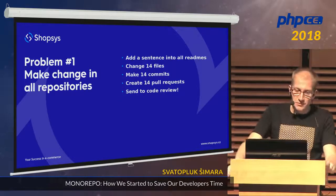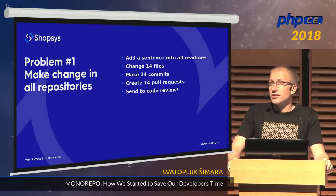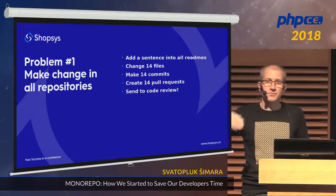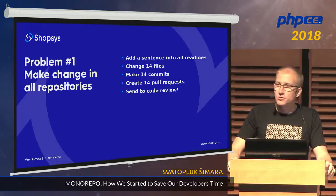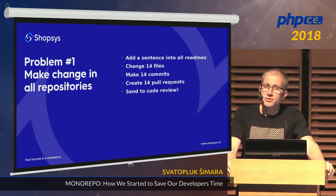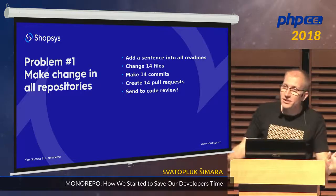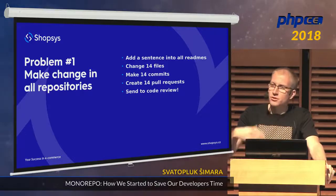The first problem: if you want to make changes in all repositories. It was exactly my task. We needed to add a simple line to all the READMEs: if you have any problem, contact us on Slack, with a link. So what did I have to do? I had to clone all 14 repositories, make the change, commit it 14 times, create 14 feature branches, push it, then create 14 pull requests — and then happily send it to code review.